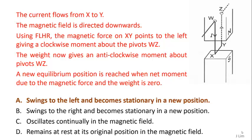The weight now gives an anti-clockwise moment about pivot WZ. A new equilibrium position is reached when the net moment due to the magnetic force and the weight is zero. So the answer is A.